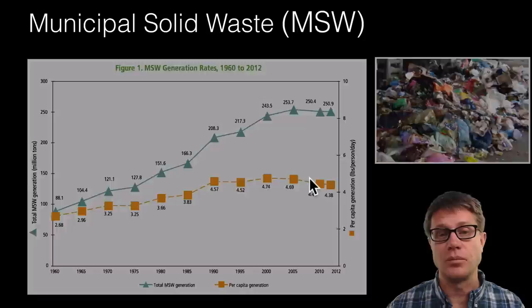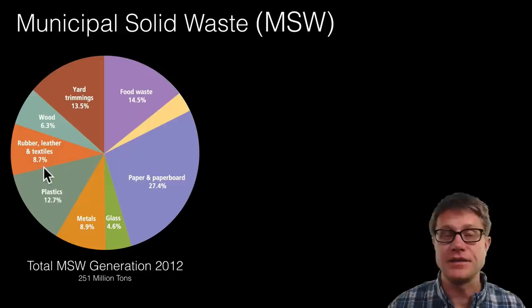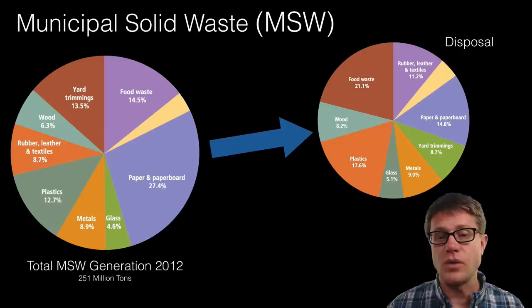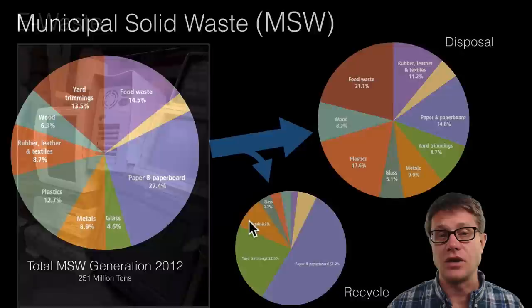You should be familiar with what most of that waste is. This is from the EPA. It is generally going to be paper, food, yard trimmings, plastics, rubber, and metals — 251 million tons per year. If we look at how much is actually disposed of, it is around 65 percent of that. The reason why is that we are recycling a lot of it — especially paper, yard trimmings, and metal. And composting a lot of those yard trimmings.